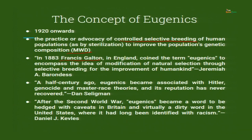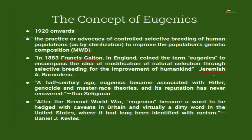In 1883, Francis Galton, a British individual, coined the term eugenics to encompass the idea of modification of natural selection through selective breeding for the improvement of humankind. This gives another parameter: improvement of humankind. A half century ago, eugenics became associated with Hitler, genocide, and master race theories, and its reputation has never recovered — as Dan Seligman notes.